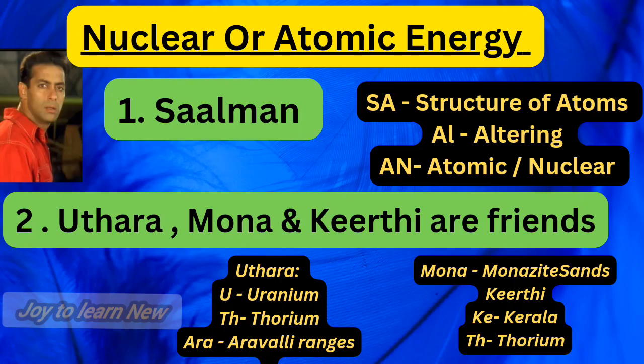Nuclear energy or atomic energy. I have given an image — his name is Salman Khan, he's an actor. Using his name we can relate the first point: 'SAL' — SA stands for structure of atom, AL stands for altering. AN means atomic or nuclear energy, obtained by altering the structure of atoms. This covers the first two points.